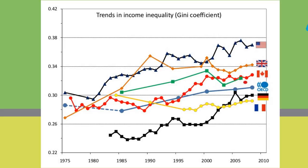In fact, using the most widely used measure of inequality, the Gini coefficient, inequality has risen from a level of 28% — 28% of the way towards total inequality — up to 31% of the way towards total inequality. So this is a big shift when measured across 30 or more countries.